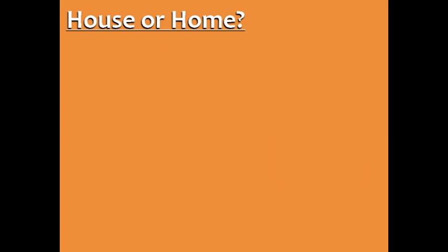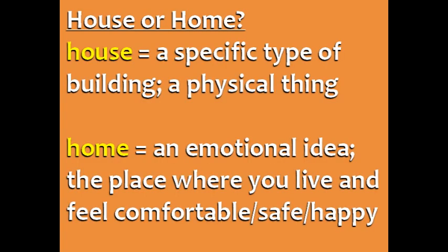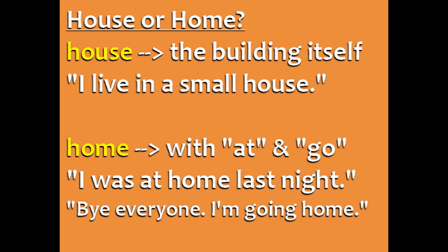Let's finish this lesson with the difference between house and home. A house is a specific type of building — a physical thing. But the word home is more of an emotional idea. It means the place where you live and where you have a special emotional attachment, where you feel comfortable, safe, and happy. Your home can be a house, an apartment, or another type of structure. In English, we often use the word house when talking about the building itself. For example: I live in a small house.